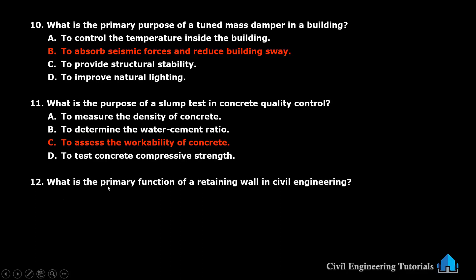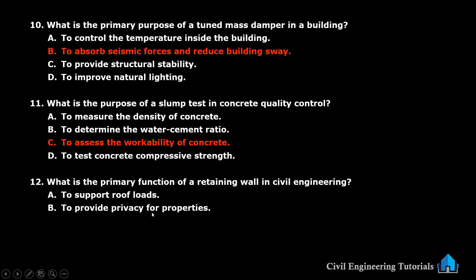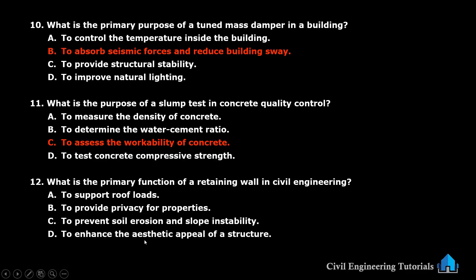Twelve: what is the primary function of a retaining wall in civil engineering? Option A: to support roof loads. Option B: to provide privacy of properties. Option C: to prevent soil erosion and slope instability. Option D: to enhance the aesthetic appeal of a structure. The answer is: to prevent soil erosion and slope instability.